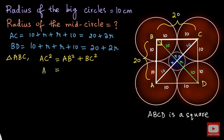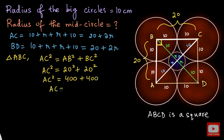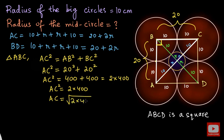Substituting, we get AC squared equal to 20 squared plus 20 squared, which is 400 plus 400, equal to 2 times 400. So AC equals the square root of 2 times 400. Since the square root of 400 is 20, we get AC equal to 20 root 2 centimeters.